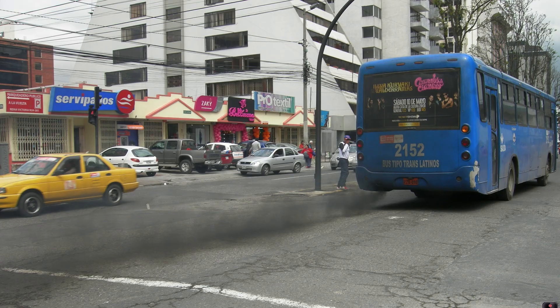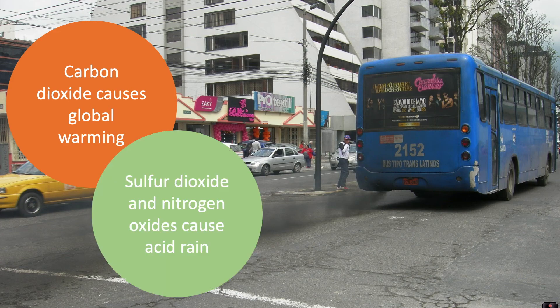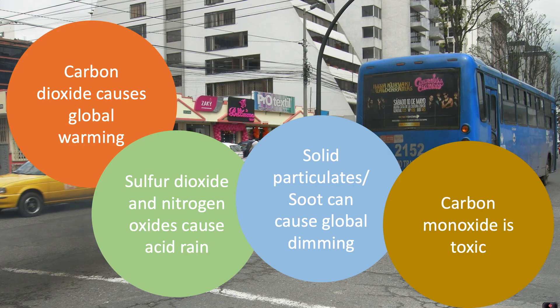So with burning fuels and combustion, we have a problem that the carbon dioxide causes global warming. Sulphur dioxide and nitrogen oxides cause acid rain. Solid particulates, otherwise known as soot, can cause global dimming. And carbon monoxide is toxic.